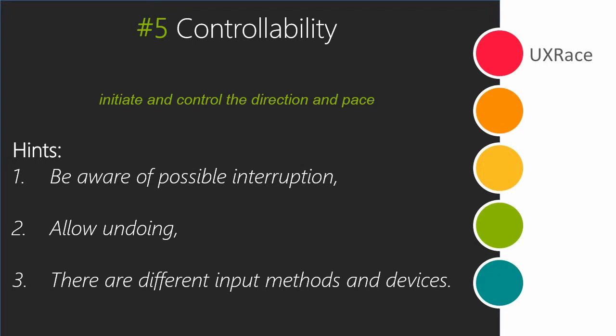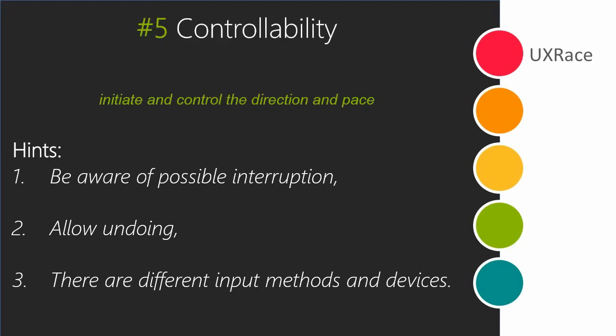The next principle is controllability. The user should be able to initiate and control the direction and pace of the interaction until the goal has been achieved. If the dialogue has been interrupted, the user should be able to determine the point of restart, undo at least the last step, and use any available input or output device where appropriate.